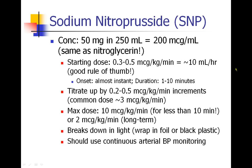Usually we won't even bother bolusing nitroprusside — we'll just start the infusion because it's so instantaneous. Starting at about 0.5 micrograms per kilogram per minute, which is about 10 mils per hour in most patients, and titrating up in increments of 0.2 to 0.5. A common landing point is about 3 micrograms per kilogram per minute. Maximum dose is 10 micrograms per kilogram per minute, but that should only be run for about 10 minutes due to cyanide toxicity risk. For longer-term infusions, 2 micrograms per kilogram per minute is your maximum. The drug is light-sensitive and should be wrapped in foil; continuous arterial blood pressure monitoring is recommended.